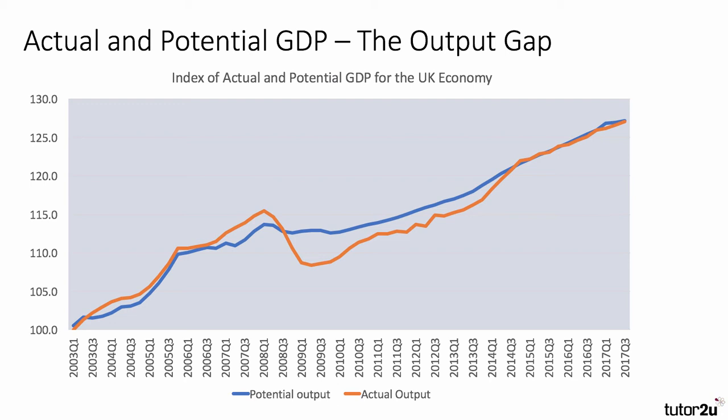A positive output gap suggests that the economy is operating above its normal potential, perhaps even at risk of overheating, with a level of excess demand. We saw that, for example, in 2007-2008 — you can see that the orange line for actual output was well above potential, whereas after the recession the orange line falls because of the collapse in output.